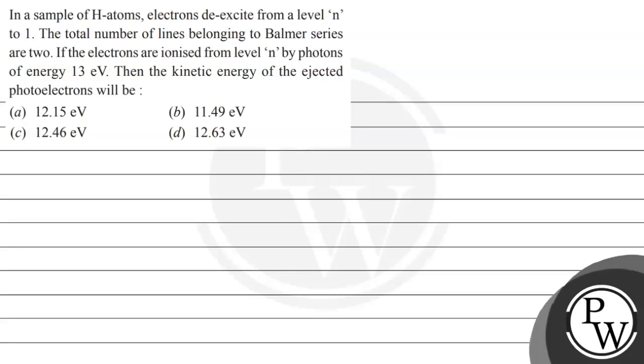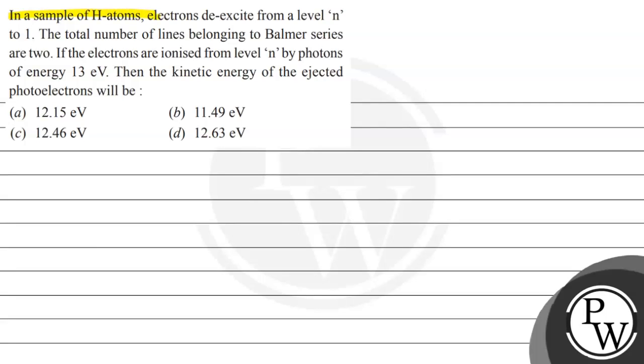Hello, let's read this question. In a sample of hydrogen atoms, electrons de-excite from a level N to 1. The total number of lines belonging to Balmer series are 2.